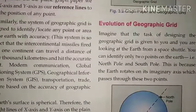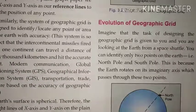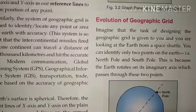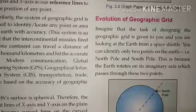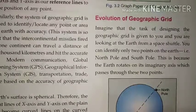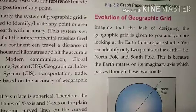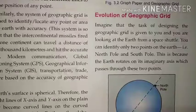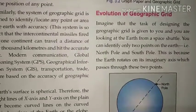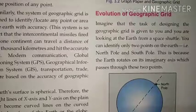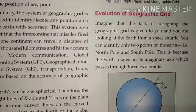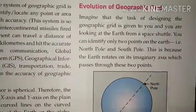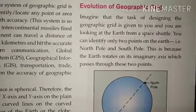Just as we use x-axis and y-axis coordinates in mathematics to locate a point, in the geographic grid latitudes act as the x-axis and longitudes act as the y-axis. On a globe, these latitudes and longitudes crisscross each other, forming a grid that helps us locate any particular place. Now let us talk about the evolution of the geographic grid.